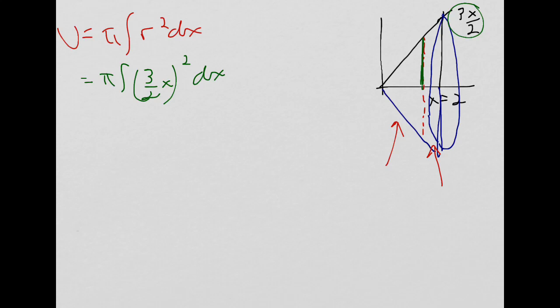So I get pi integral three over two x squared dx. And then I need to do my bounds, so I'm gonna start at 0 and go out to this spot, so I'm gonna go out to x equals 2. So I'm gonna go 0 to 2.